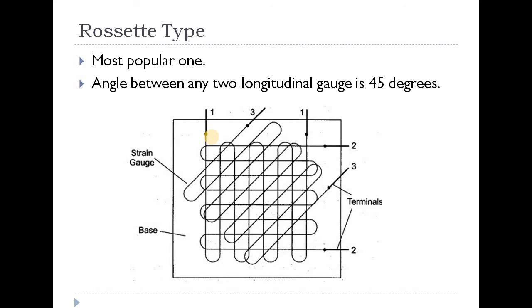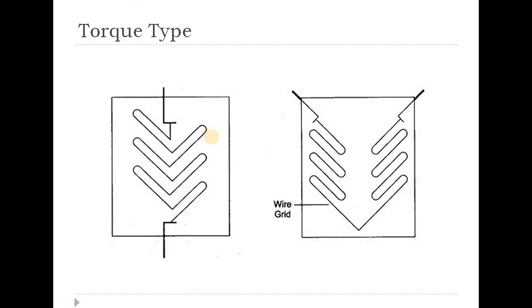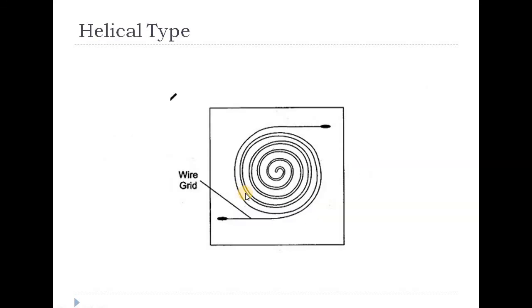The angle between any two longitudinal gauges is 45 degrees — this makes the rosette type the most popular. The third type is torque type, which uses a wire grid arrangement suitable for torque measurement. The last one is helical type — not a rotatory type but a helical arrangement.